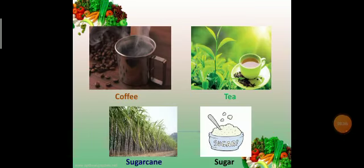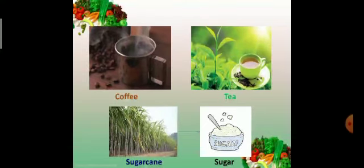Coffee, tea and sugar. We get coffee, tea and sugar from plants. Most of humans drink coffee and tea every day. This coffee is made from coffee beans. Tea is made from tea leaves. And sugarcane give us sugar.